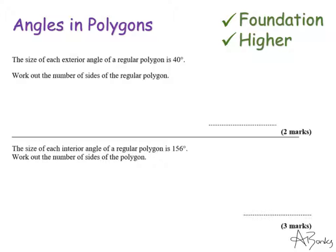There is one more skill to cover: finding the number of sides of a polygon from a given angle. The first example: each exterior angle of a regular polygon is 40 degrees — work out the number of sides. Using the formula 360 ÷ n = exterior angle, we substitute 40: n = 360 ÷ 40 = 9. So it's a 9-sided shape.